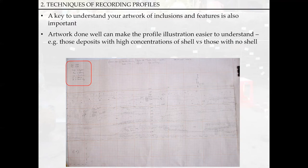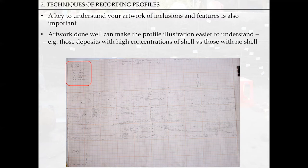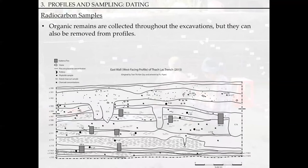Artwork done well can make the profile illustration look aesthetic, but importantly it makes it easier to understand. It's very clear which deposits have lots of shell in them and which don't. If this was just drawn as horizontal lines and empty with numbers, it would lose some of that visualization — you wouldn't be able to see what is actually being articulated. You can also see features here — post holes and little pits that have been excavated through — and they've got their own numbers as well.